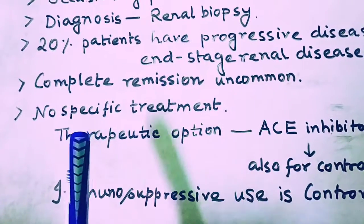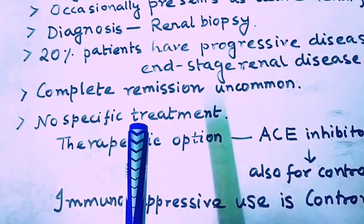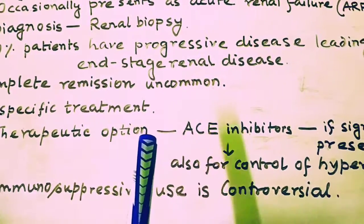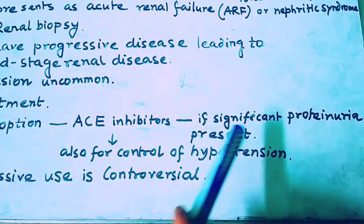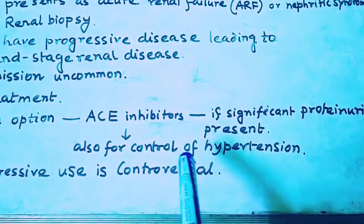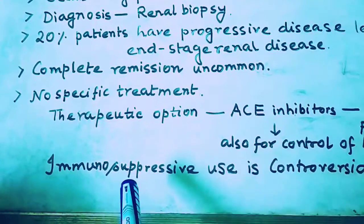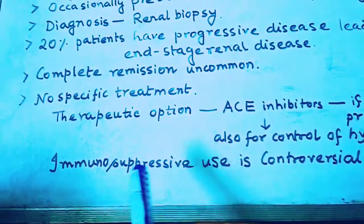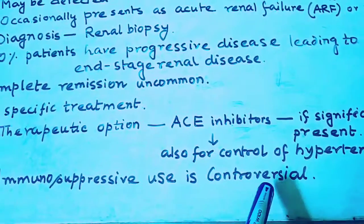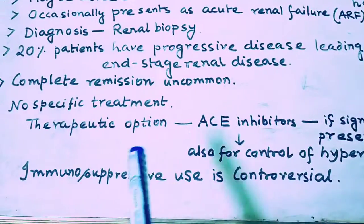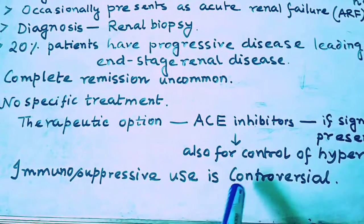There is no specific treatment for IgA nephropathy. Therapeutically, ACE inhibitors are used when significant proteinuria is present and for control of hypertension. Immunosuppressive therapy can also be used, but its use is considered controversial.